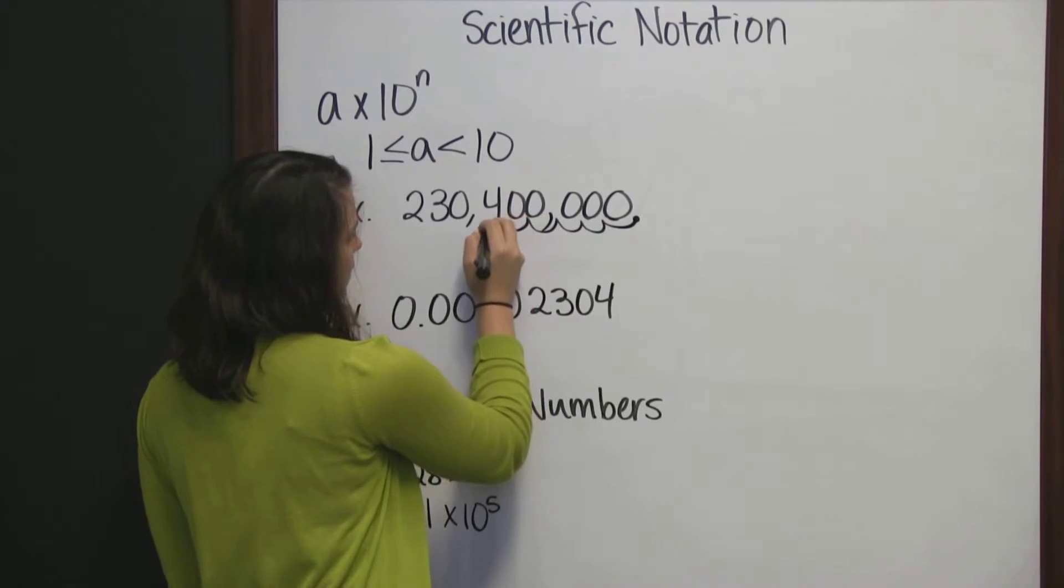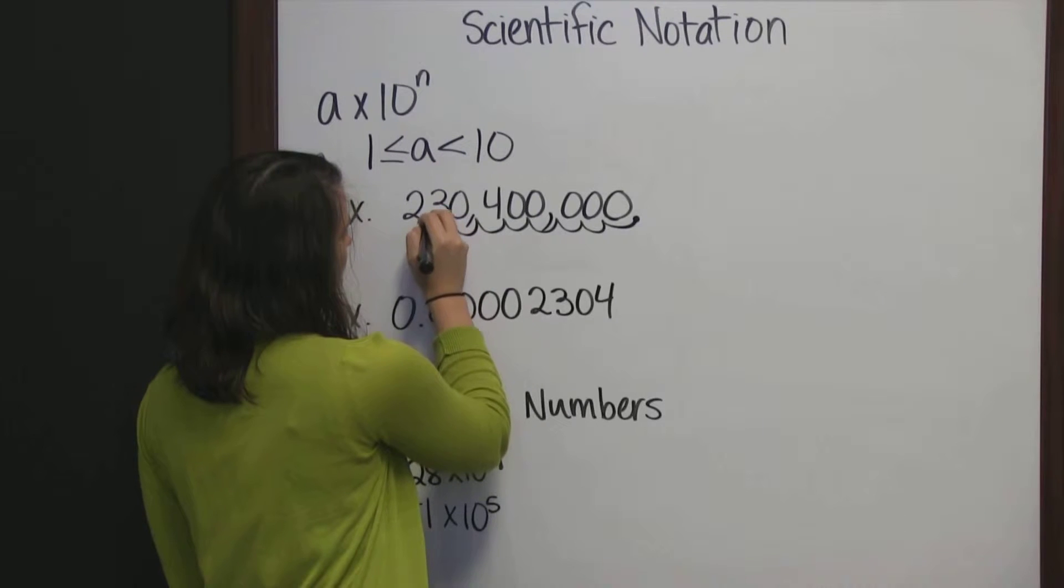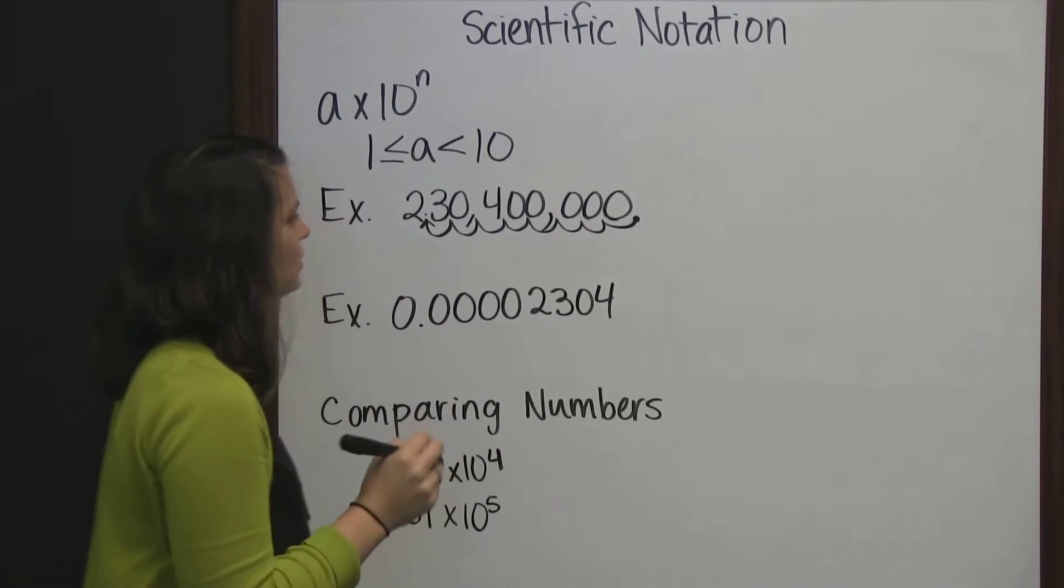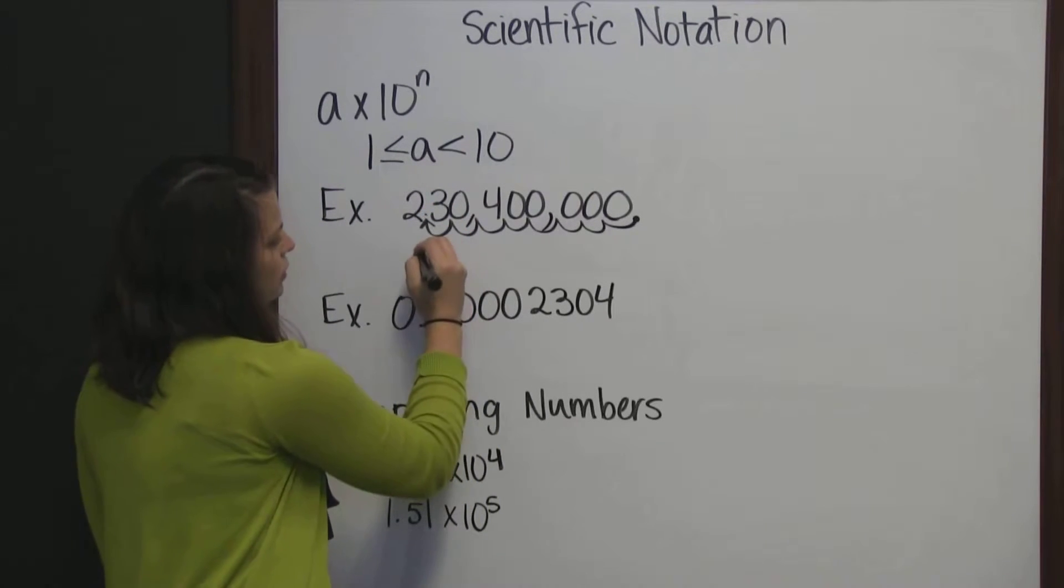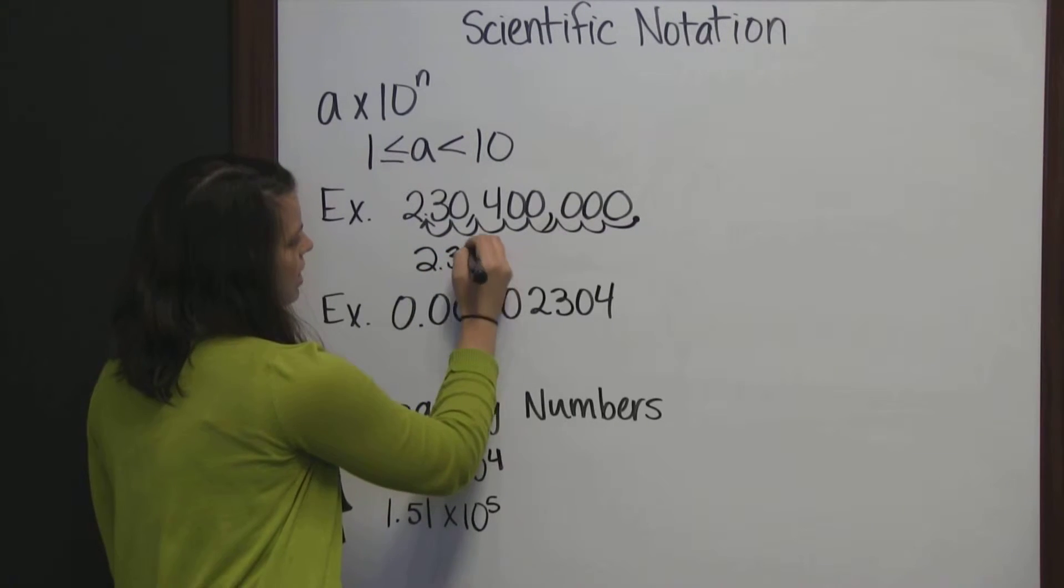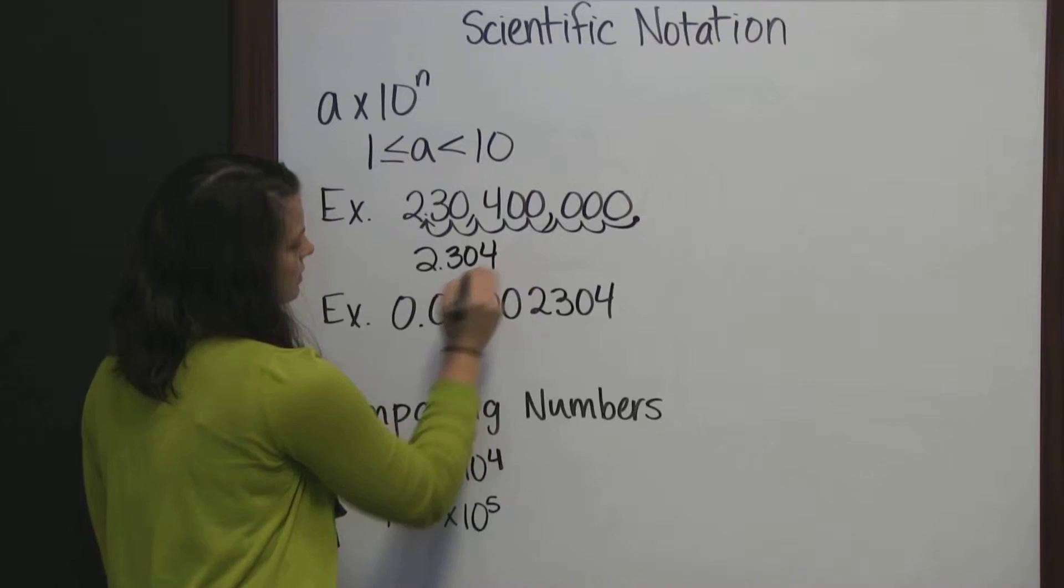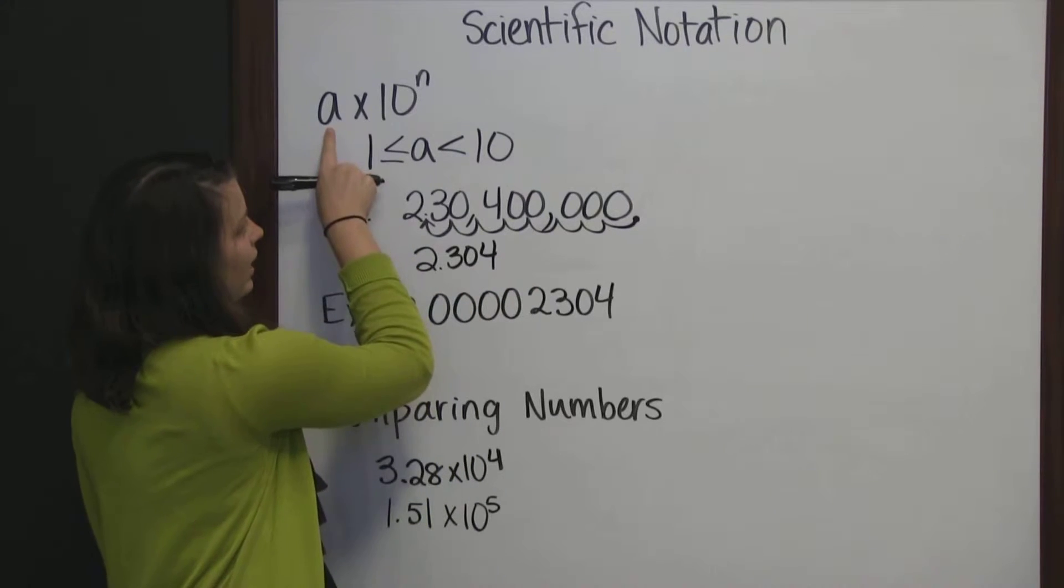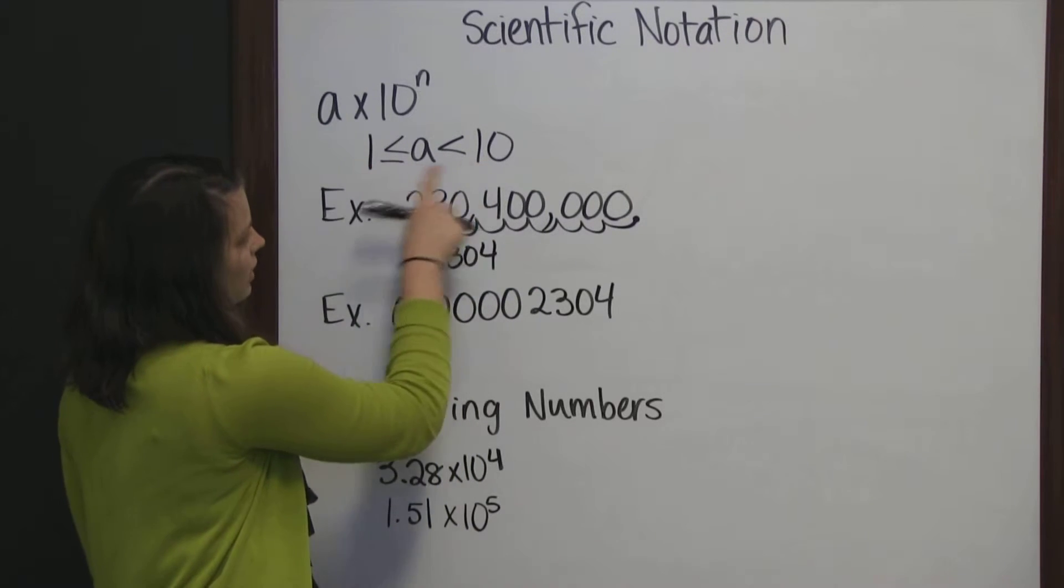5, 6, 7, 8 places to the left. So that our number is now 2.304. And you see my a is a number between 1 and 10.